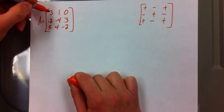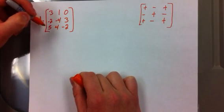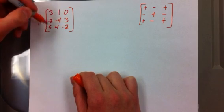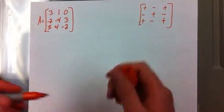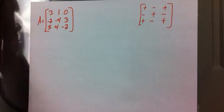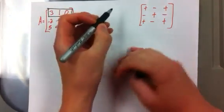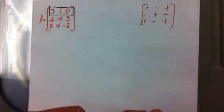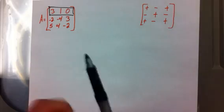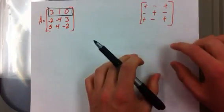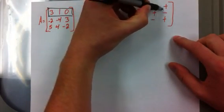You can do the cofactor expansion by the first row, or the first column, or the second column, or the third column, or whatever. In this example, let's just do it straightforward by the first row. So our cofactor expansion is going to be by the first row. You've got to follow the pattern in your cofactor — you've got to give your cofactor either a plus or negative sign in front of it.